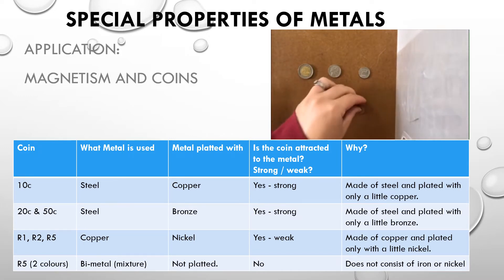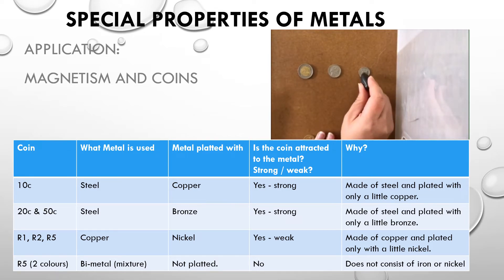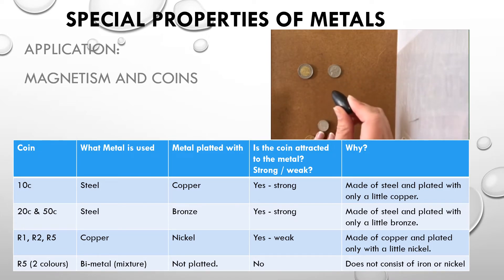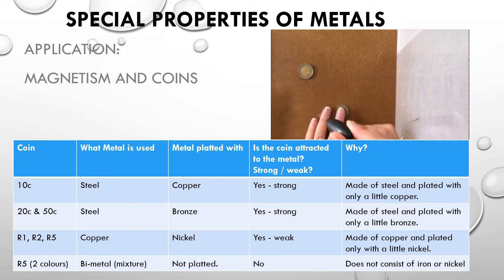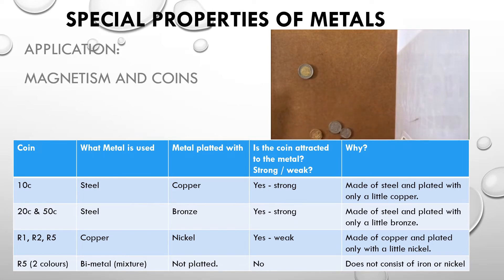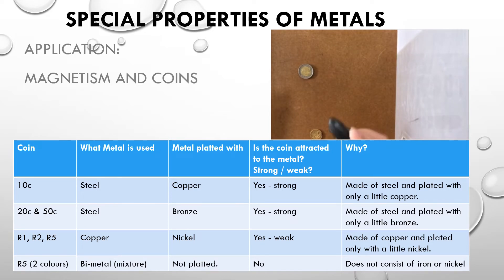Now looking at the 1 rand coin, it gets stuck but it's actually quite weak and flimsy — if I shake it, it falls off. This is because it is only coated in nickel. Nickel is magnetic, but the 1 rand and 2 rand are made of copper, which is not magnetic. It is only coated in nickel, so there is some magnetic metal in it, but the magnetic force is very weak.